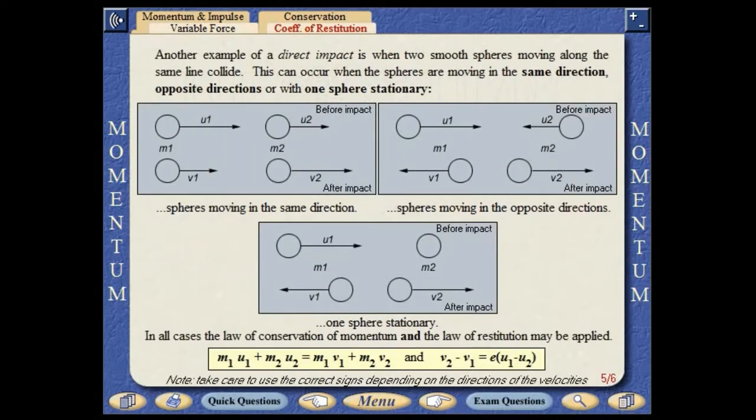Another example of a direct impact is when two smooth spheres moving along the same line collide. This can occur when the spheres are moving in the same direction, in opposite directions, or with one sphere stationary. In all cases, the law of conservation of momentum and the law of restitution may be applied.